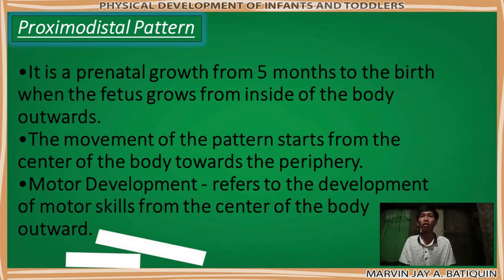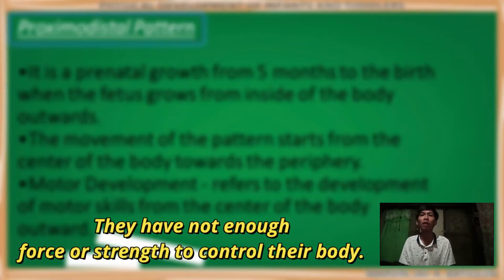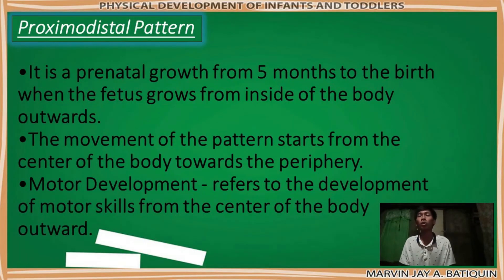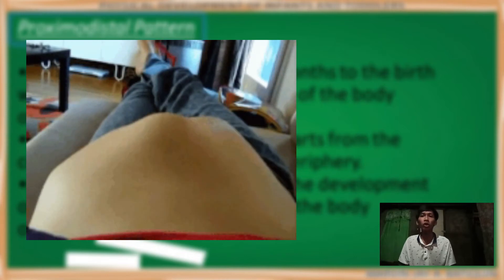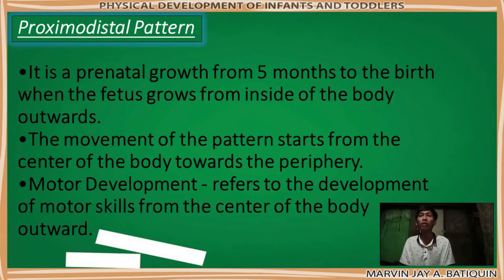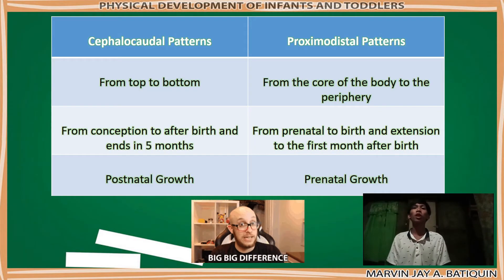Motor development refers to the development of motor skills from the center of the body outward. Infants have an ability to move around — from the word itself, motor skills, it means movement. But the movement of the infant is limited because they do not have enough force or strength to control their body. We know that even a fetus can move inside the womb. That's why motor development is included in the proximodistal trend, because it talks about movement. Now the parts of the body become fully functional. Here's the difference between the two trends.